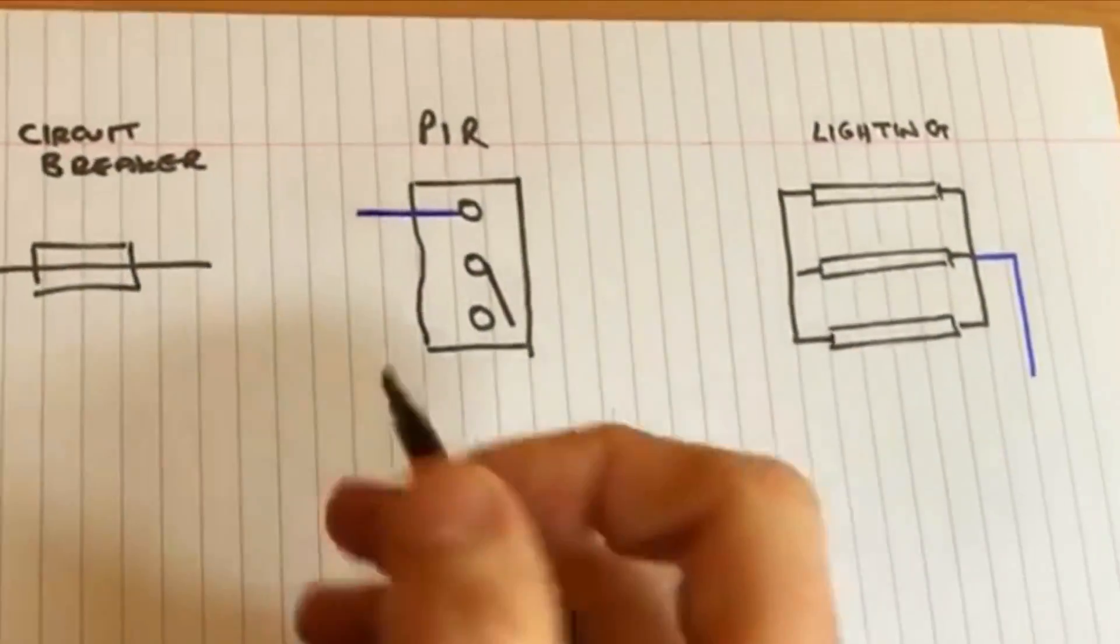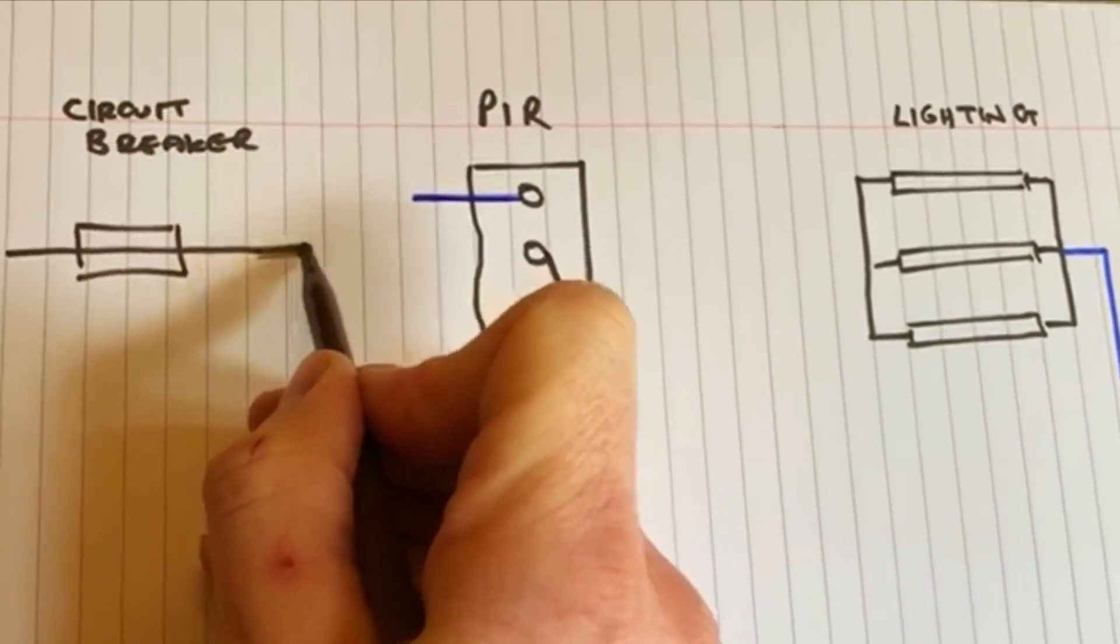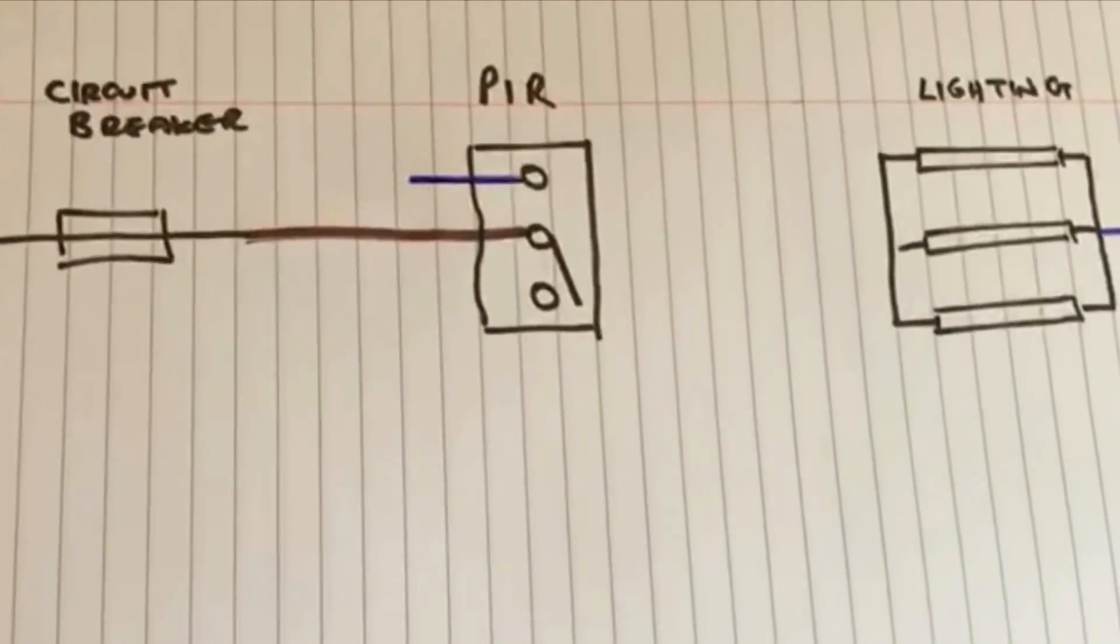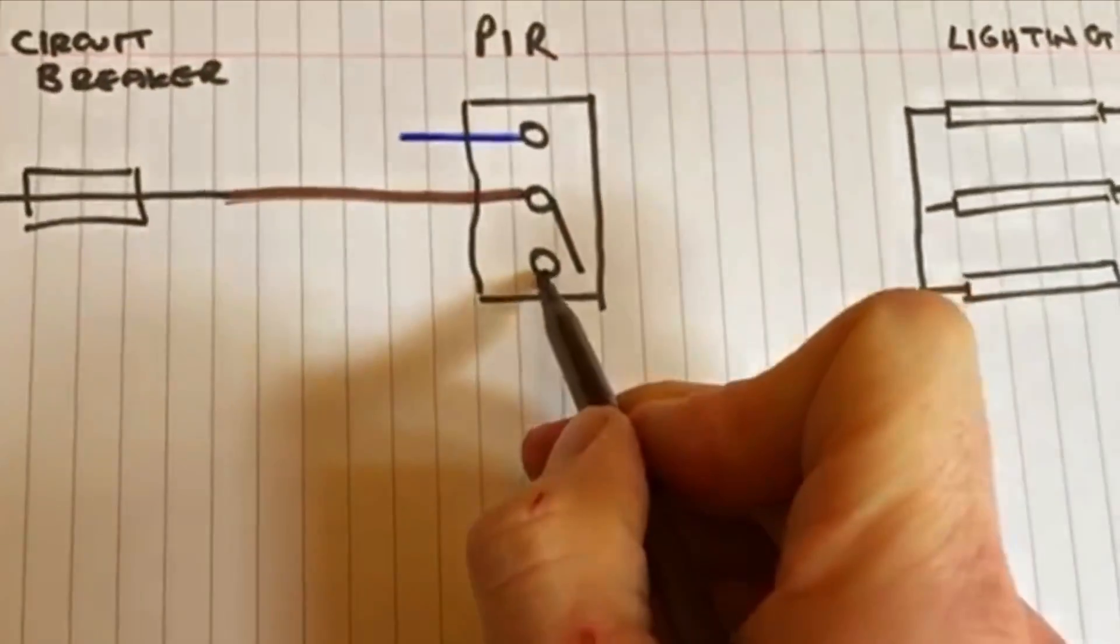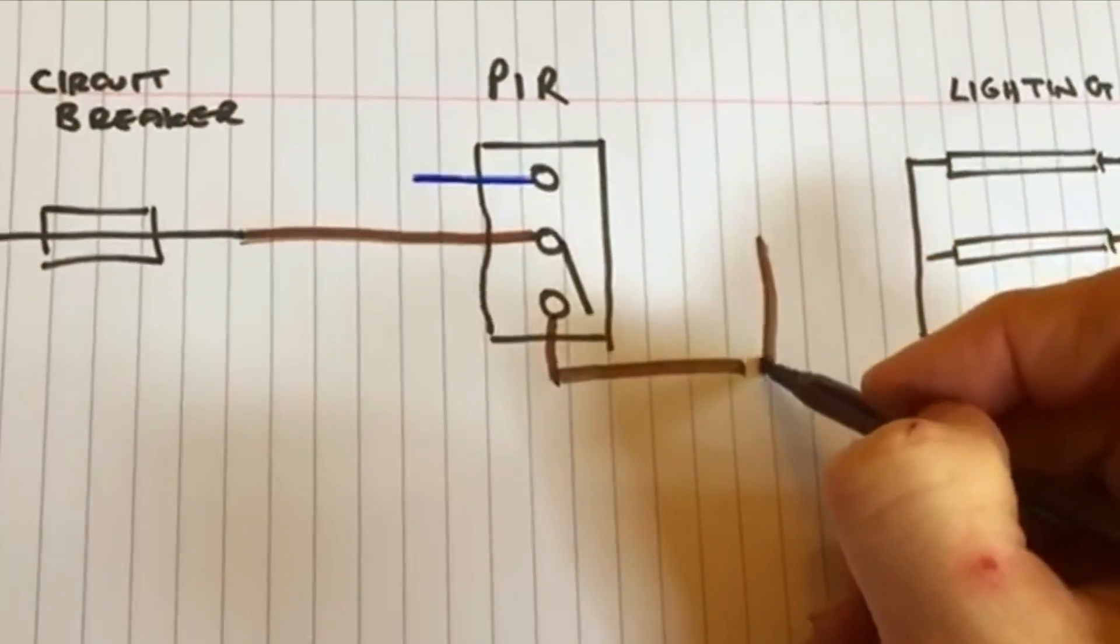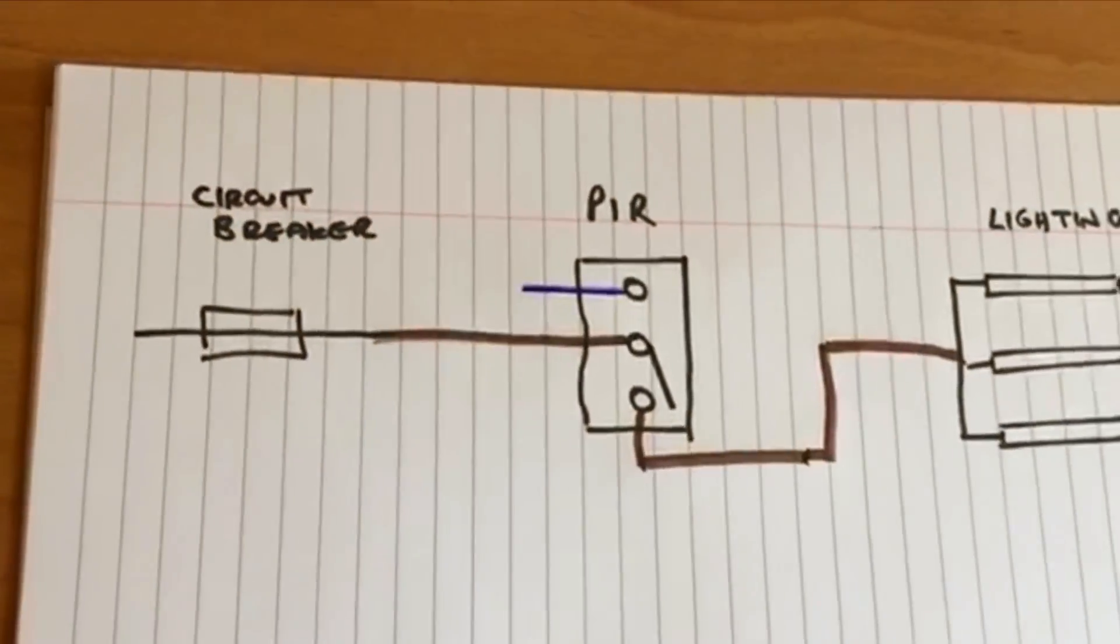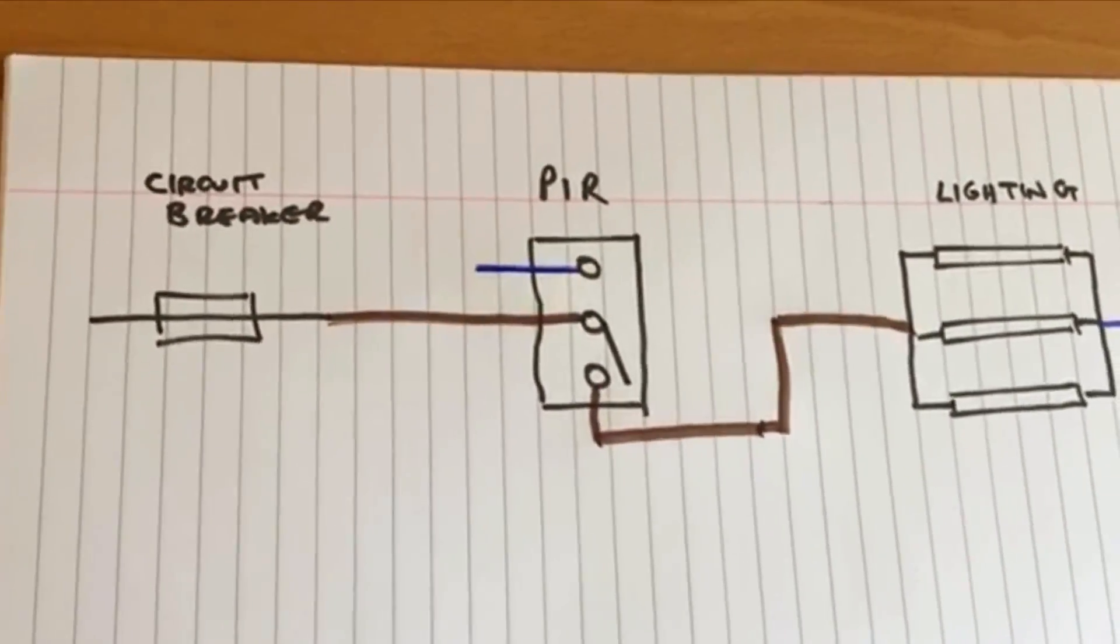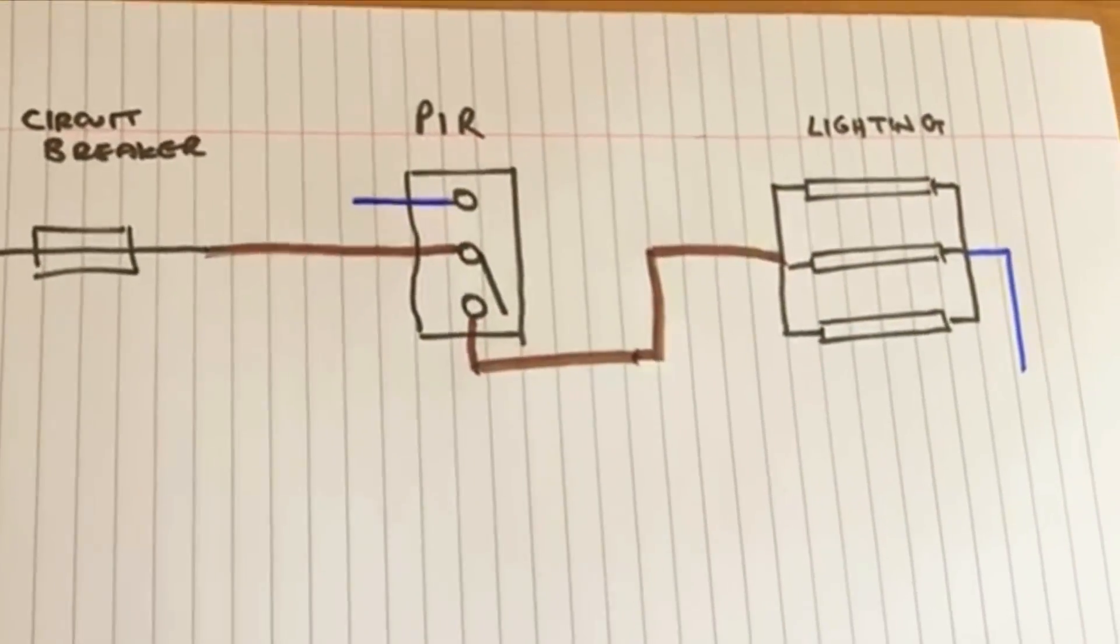So basically we've got the circuit breaker which simply takes a live feed to the PIR, which again as you can see is just a switch, and then another feed going to the lights. And that's how a basic PIR lighting circuit is connected up.